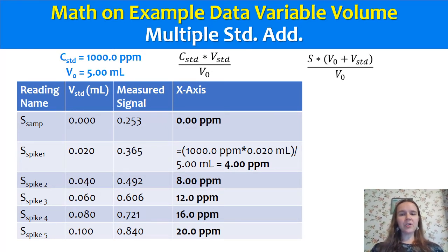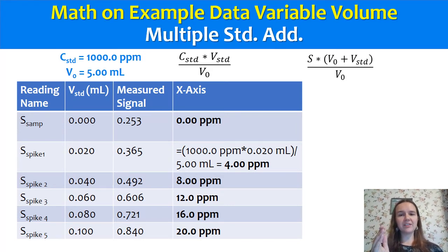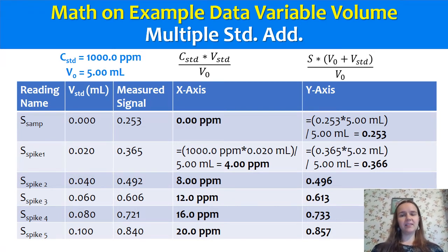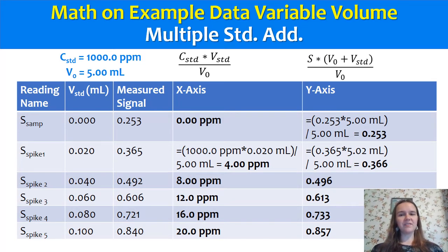For the y-axis, you also account for the fact that you've slightly expanded the volume. Your measured signal is S, and you multiply that by the total volume — which is V_0 plus V_standard at any particular sample — then divide by the volume of the original sample. For the very first point with no added standard, that formula produces your original signal of 0.253. For the rest, it slightly adjusts the signal based on the small dilution that the standard added. In the second row, 0.365 is your raw signal; 5.02 mils is the 5 mils of sample plus the 0.02 mils of standard, then divided by 5.